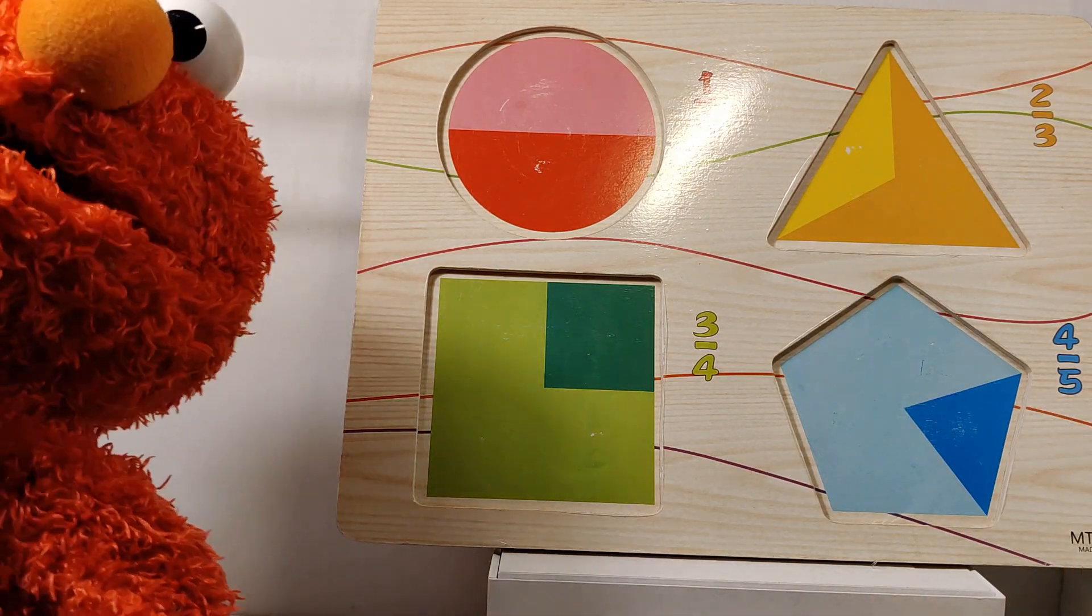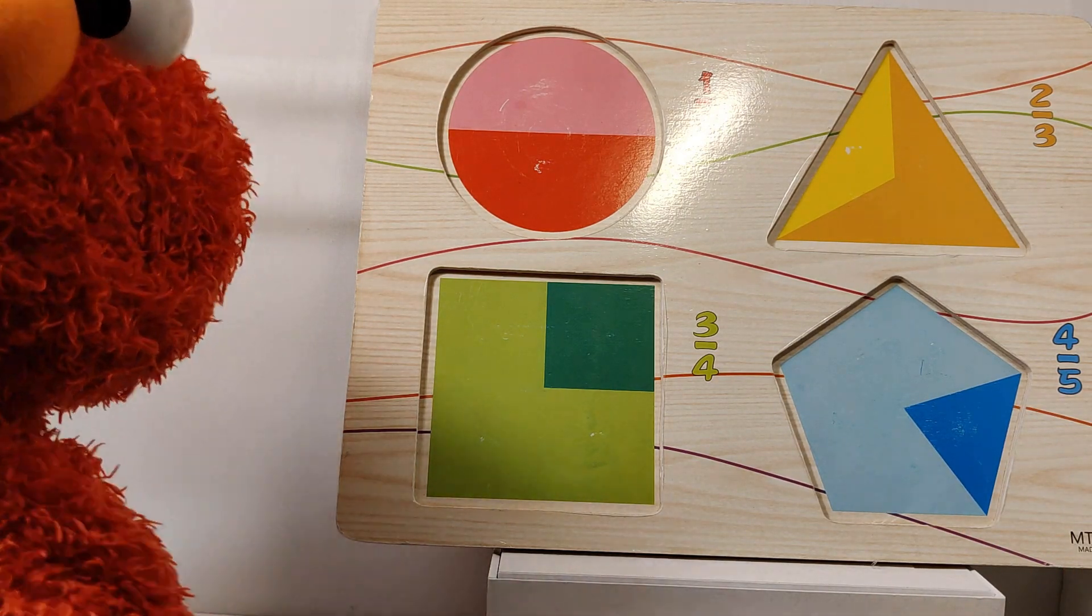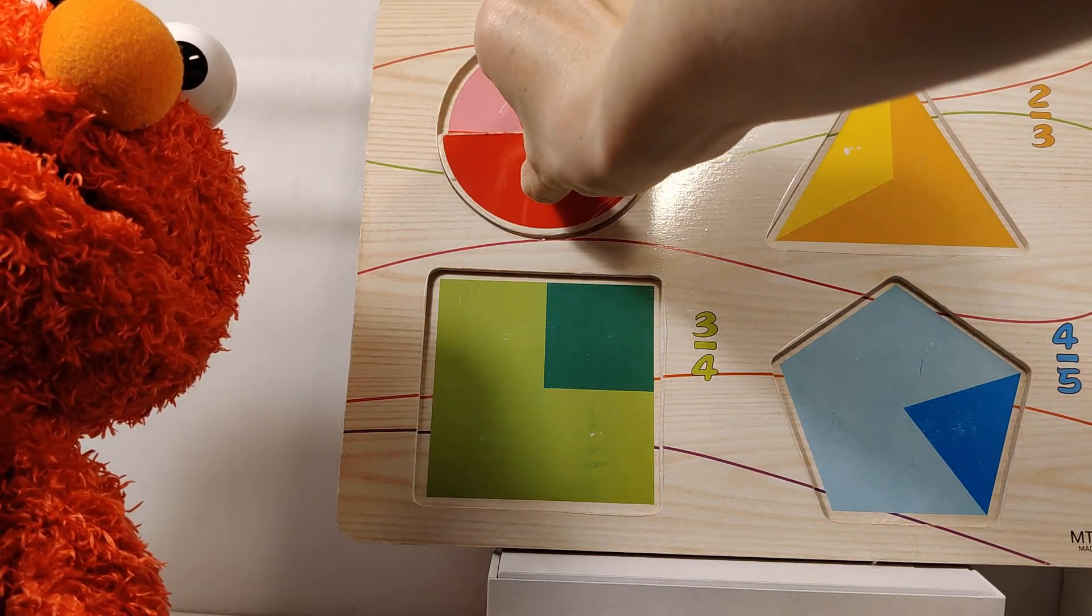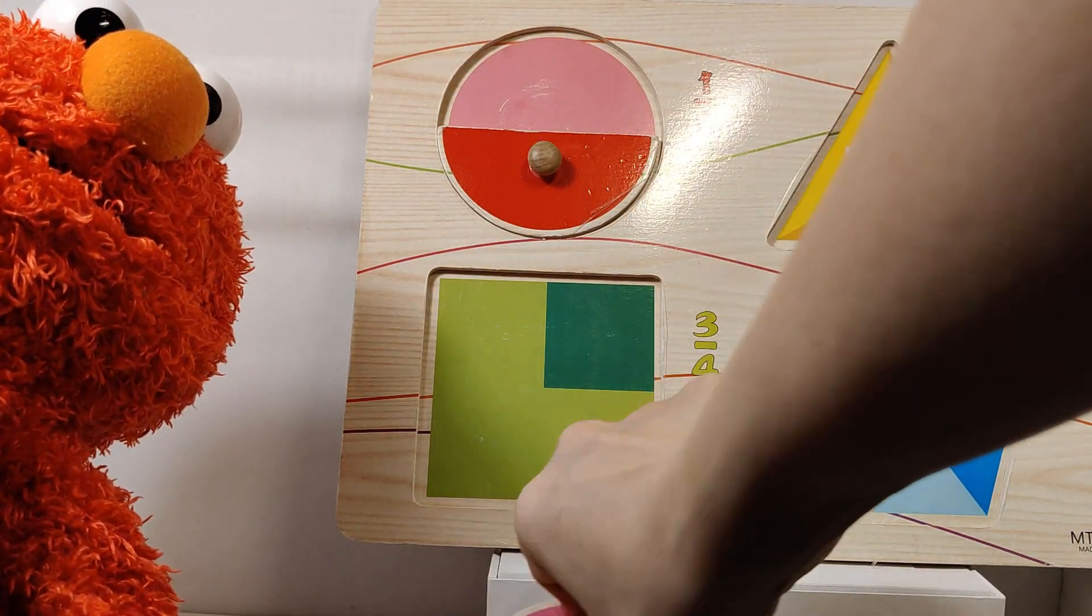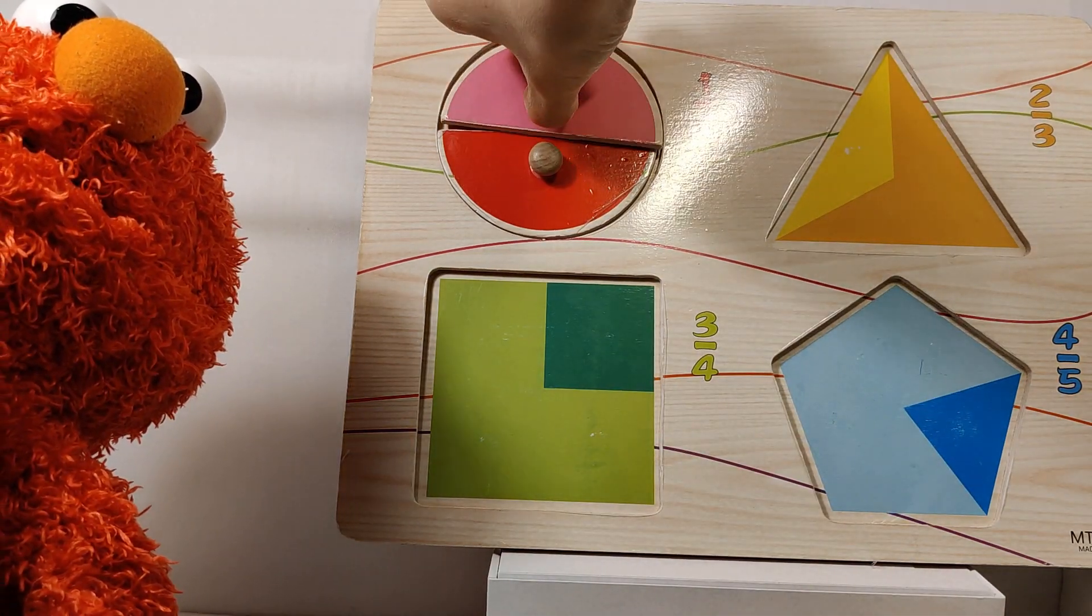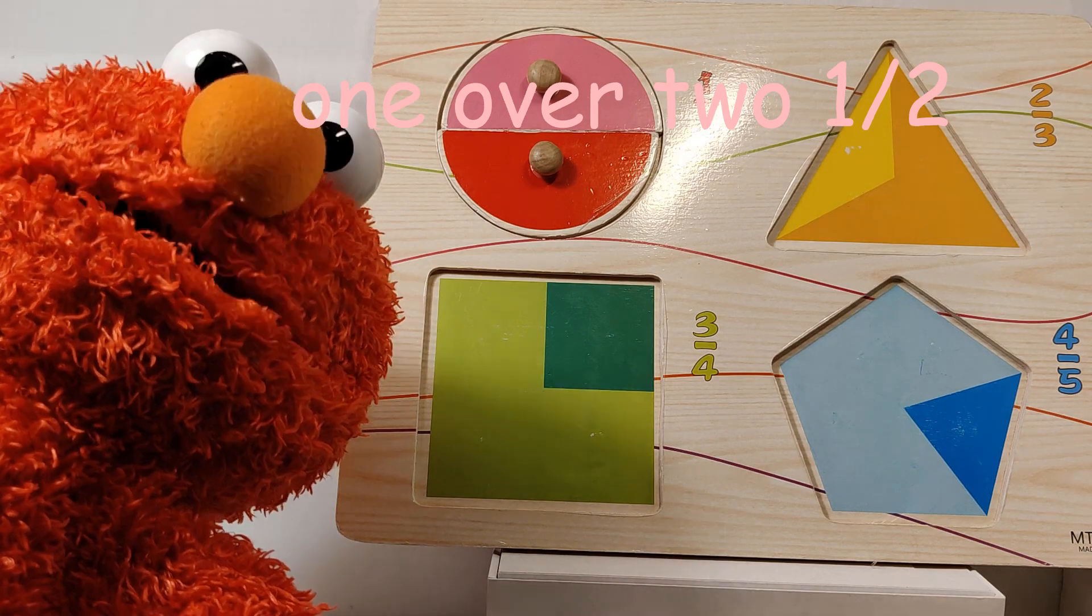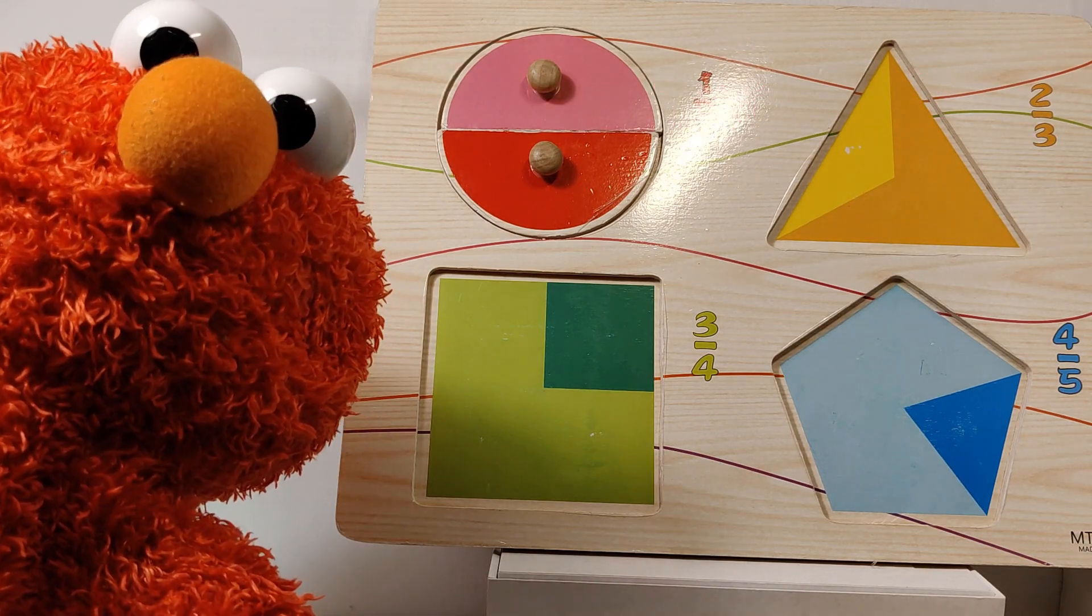For the circle, we will look at the painting. I'll pull out the red shiny circle first. Alright, and look at the painting. This is 1 over 2.